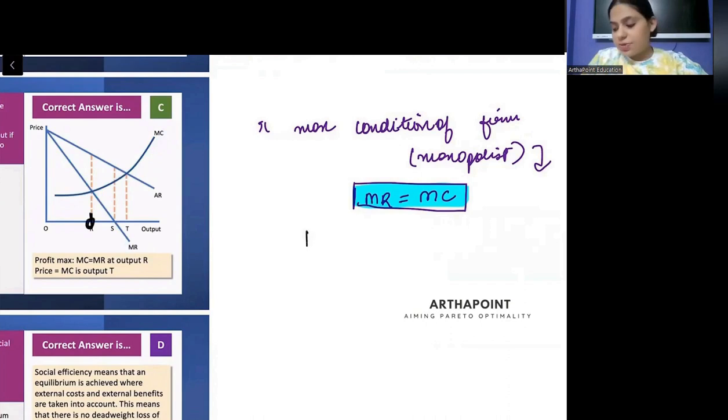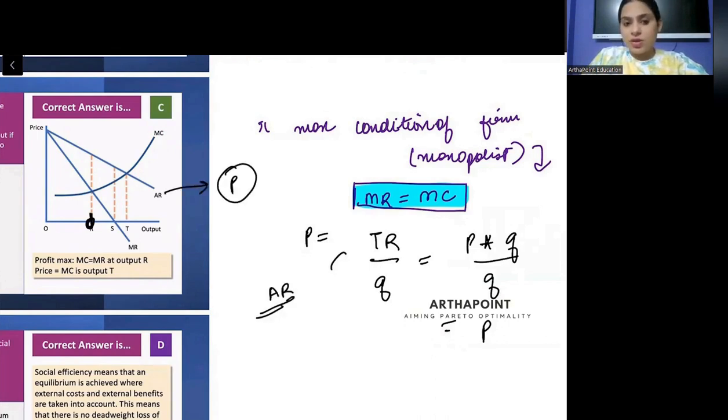What is price? Price is nothing but TR by Q. Because TR is price into quantity by quantity, it is P. And TR by Q is nothing but AR. So we know that AR is also price.